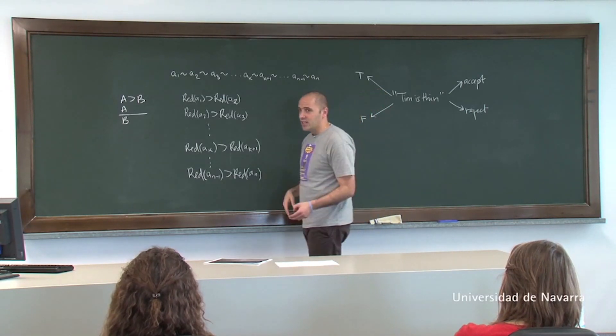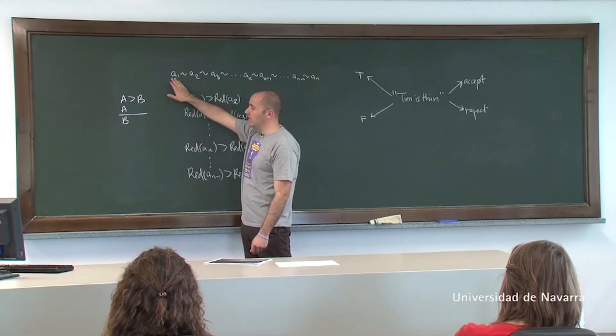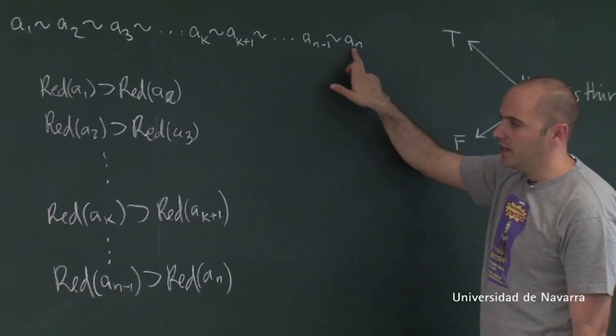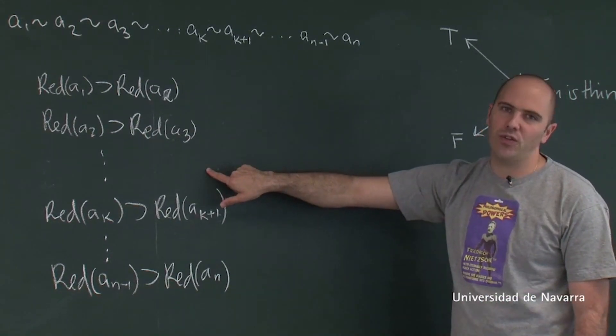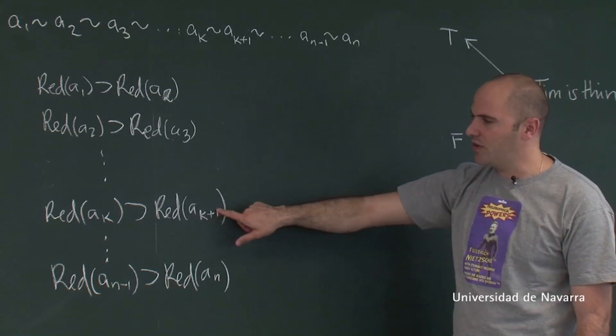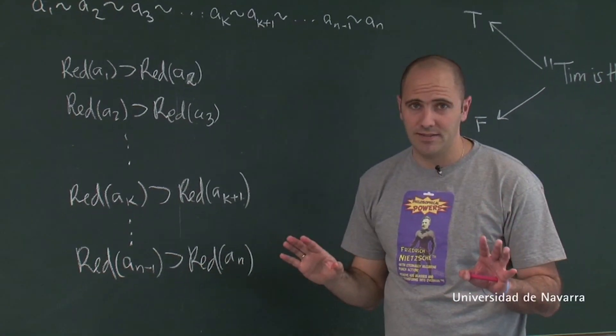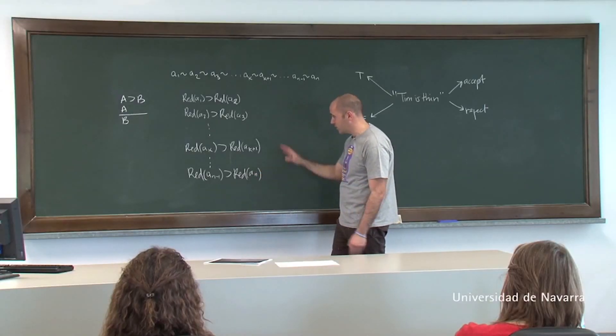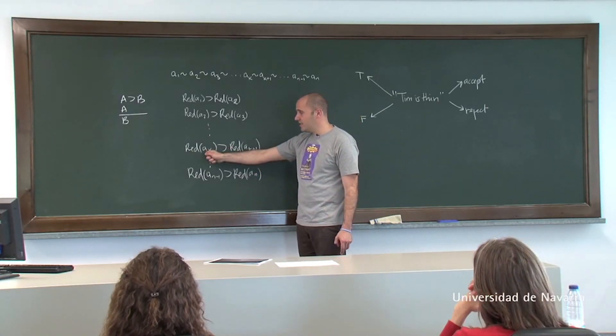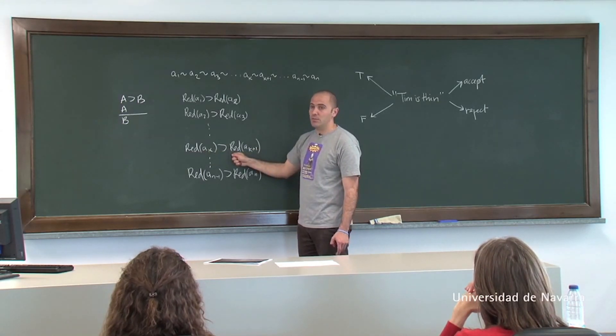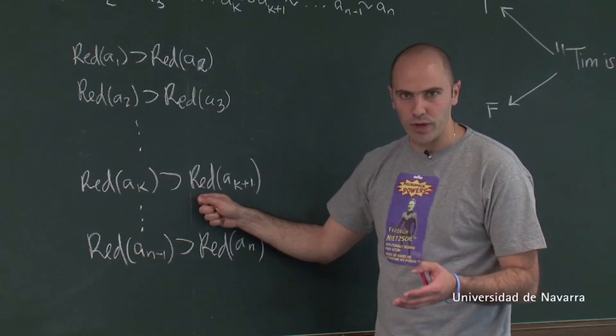In other words, it follows in classical logic that if this guy here is red, and this other one is not red, then there is a false conditional. So there is a conditional that is false. Now this is striking. This is truly remarkable because this means that there is one item that is red, followed by some other item that is not red.